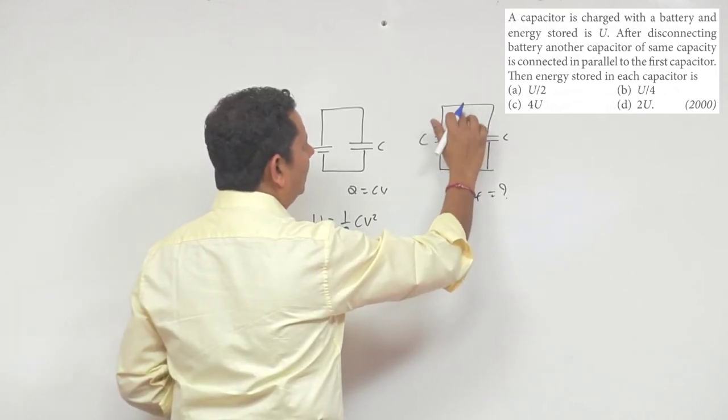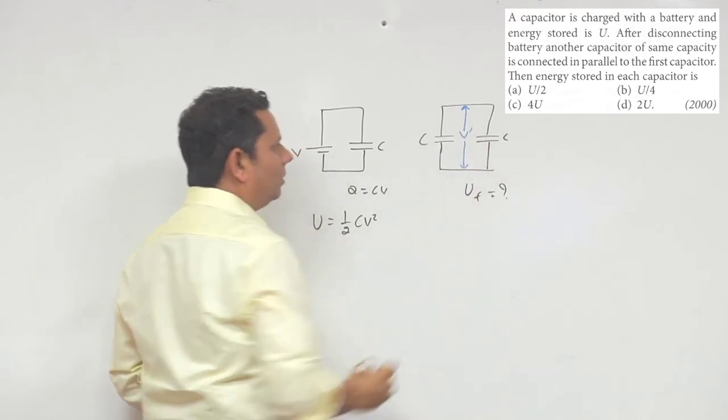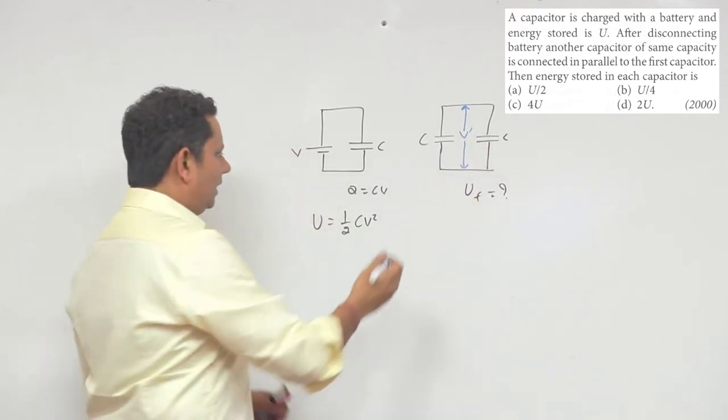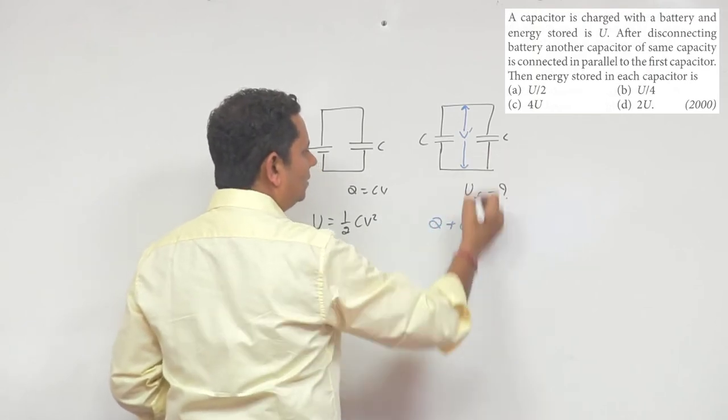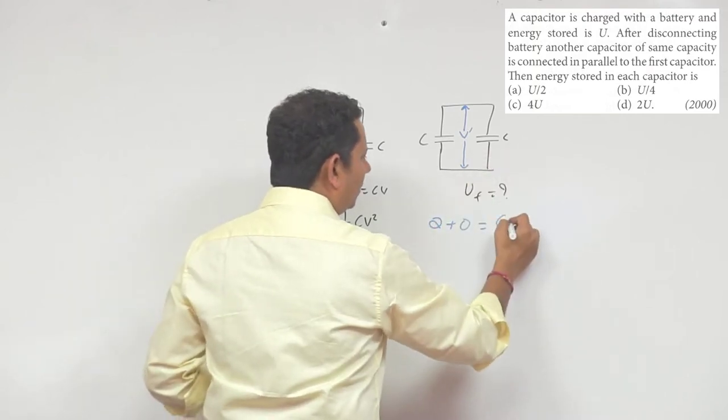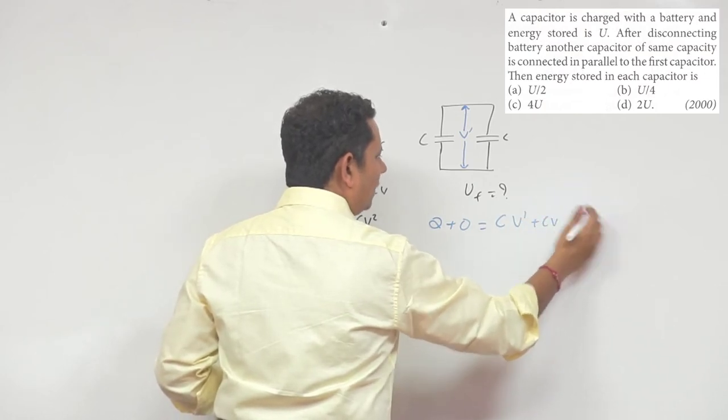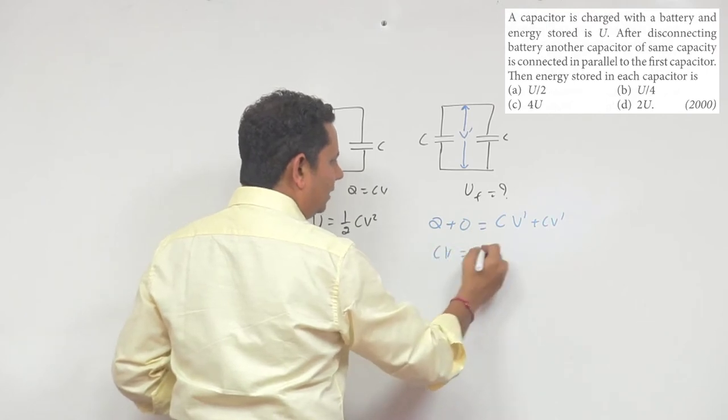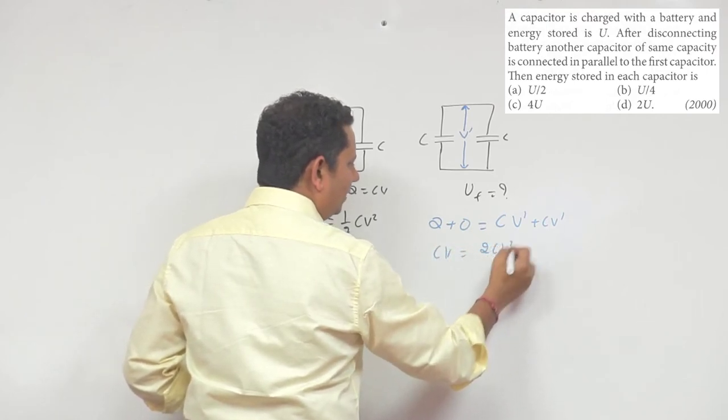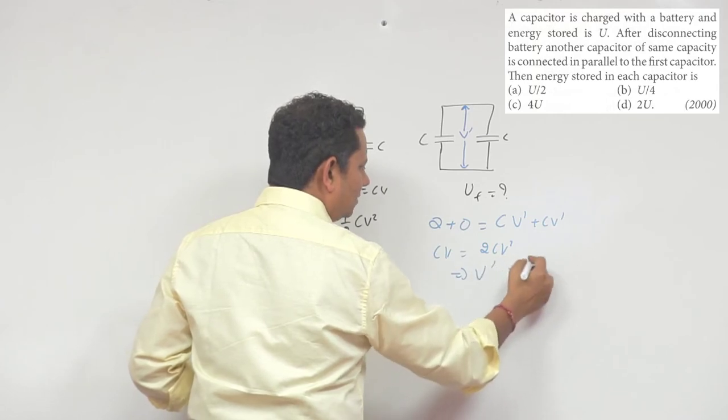So we have to find the common potential. What will be the value of V' here? The common potential, we can write here, because charge will be conserved: Q plus initial charge (which was 0) will be equal to CV' plus CV'. This implies Q can be written as CV = 2CV', which implies V' - the new potential - is equal to V/2.